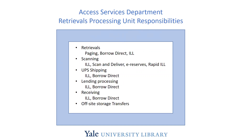If it's a scanning request — whether for ILL, local scan and deliver, reserves, or ILL — they're doing scanning. If something needs to be shipped out for ILL or Borrow Direct, they're doing all the packing and processing using UPS WorldShip, all the lending processing using either ILLiad or Relay D2D for Borrow Direct, and receiving of incoming materials for both services. In addition to all that request-based work, they're also doing all the transfers from these two libraries to our offsite storage location.